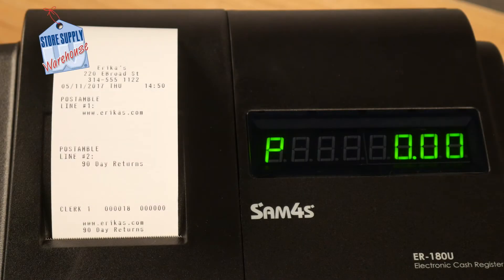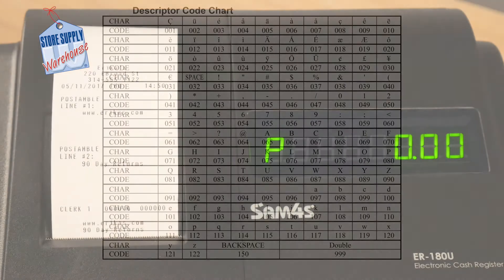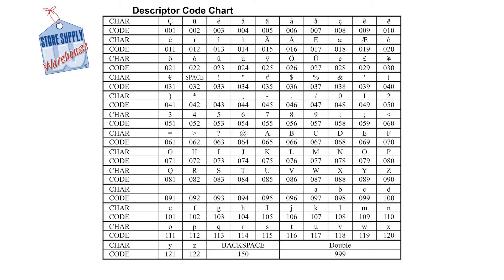A post amble message of up to six lines can be printed at the bottom of each receipt. Each line can consist of up to 24 characters. To program a post amble message, please refer to the descriptor code page located within your manual. Each letter, number, and symbol has a corresponding three-digit code that can be typed into the register.